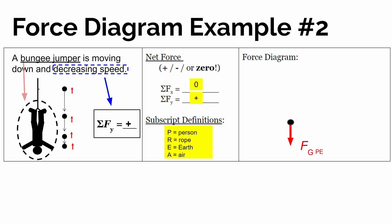So the person is stretching the rope down, so the rope will be pulling the person upward. We call that a force of tension. So we're going to draw an arrow up that's larger in size than the gravitational force.